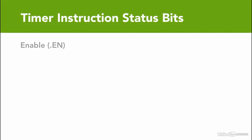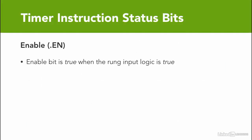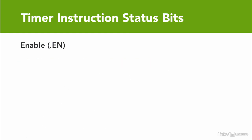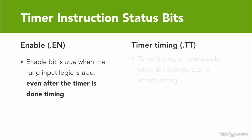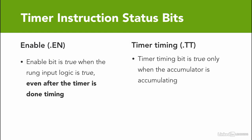The third bit is the timer enable bit. The enable bit is true when the rung input is true, and false when the rung input is false. The main difference between the timer enable bit and timer timing bit is that the timer timing bit is only true while the timer is timing, whereas the enable bit is true as long as the rung is true, even after the timer is done timing.